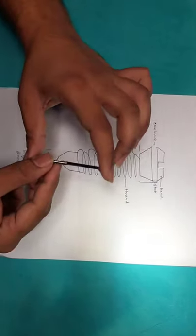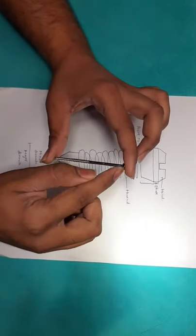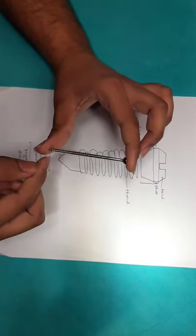Now, anatomy of screw. A screw has four parts: this is the head, this is the shaft, this is the thread, and this is the tip.